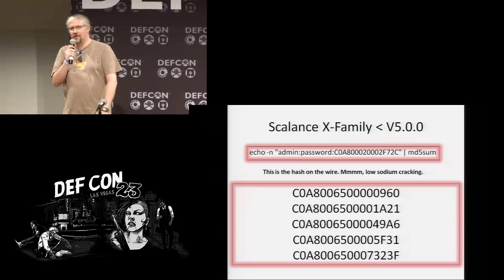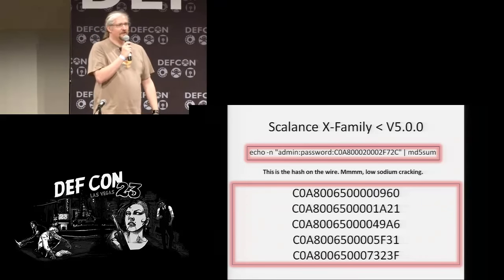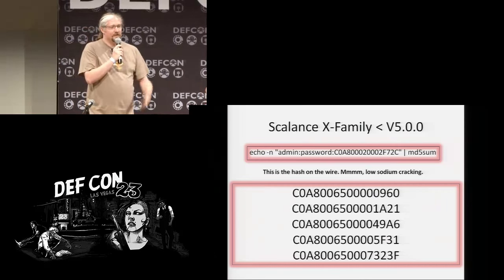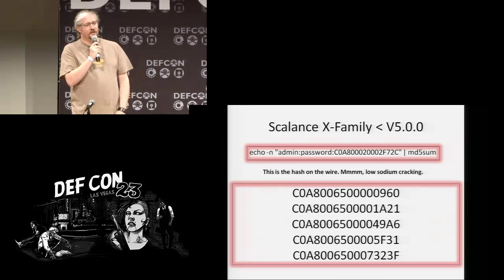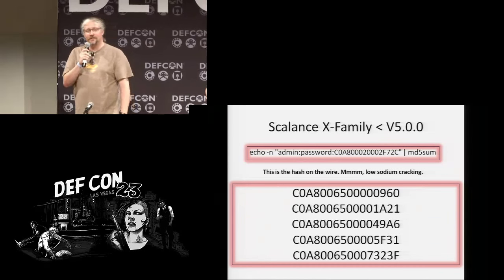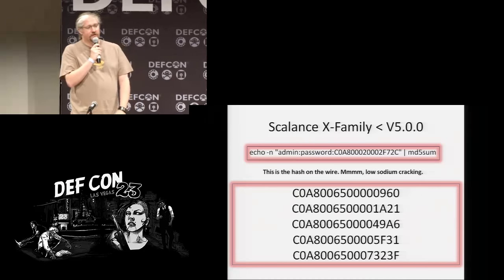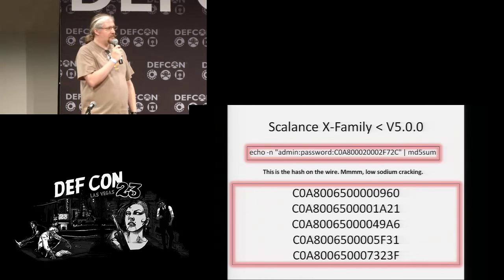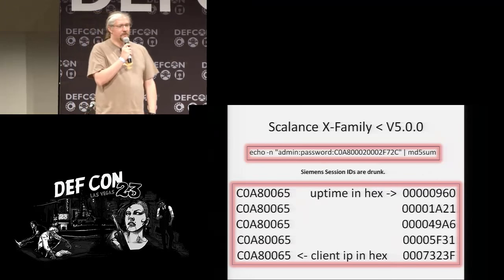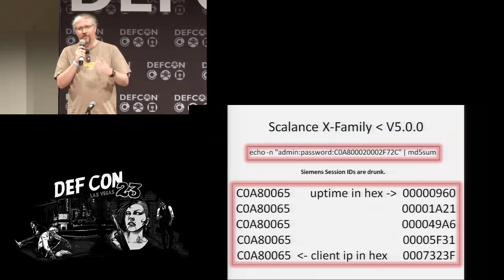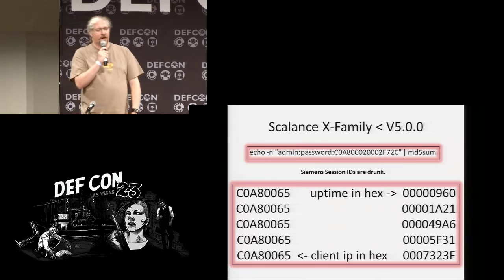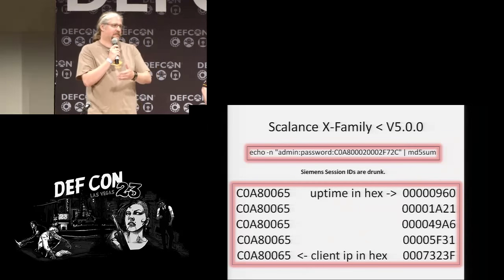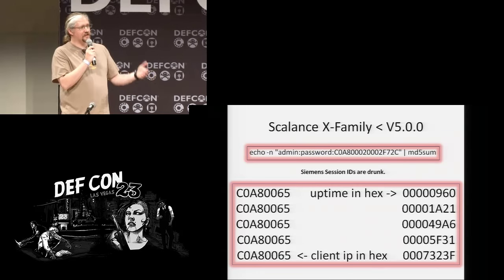For those of you who do reverse engineering, these vulnerabilities should be pretty obvious. You see the 'CO' and the 'AA' and you probably think that looks like a local IP address. But you'll also notice they're strictly increasing — these session IDs are increasing only, not as random as they could be. If you pull the device every second, it gives you incremental session IDs. And when I compared that with an SNMP request for the uptime of the device, I discovered it was indeed uptime in hex.